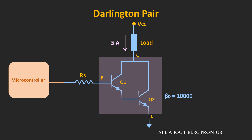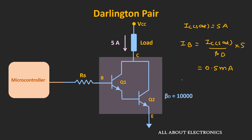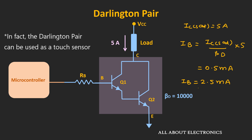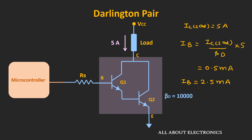But instead of a single transistor, if we use the Darlington pair, then using the same microcontroller we can drive this particular load. Let's say the β of this Darlington pair is equal to 10,000. In this case, IC(sat) is still 5A, but now the required base current will be equal to IC(sat) divided by βd, that is equal to 0.5mA. For deep saturation, if we take the value of IB as 5 times this value, then the required base current will be equal to 2.5mA. So just with a base current of 2.5mA, we are now able to drive a load of 5A. This microcontroller can easily provide the required current, so using this Darlington pair, this high current driving load can be easily controlled even with a very small base current.